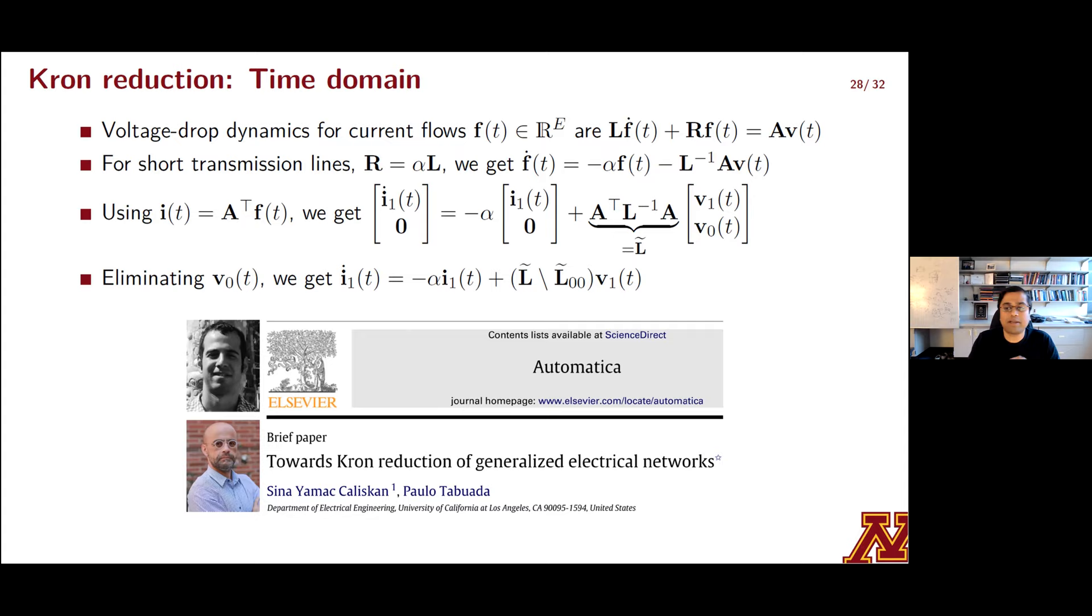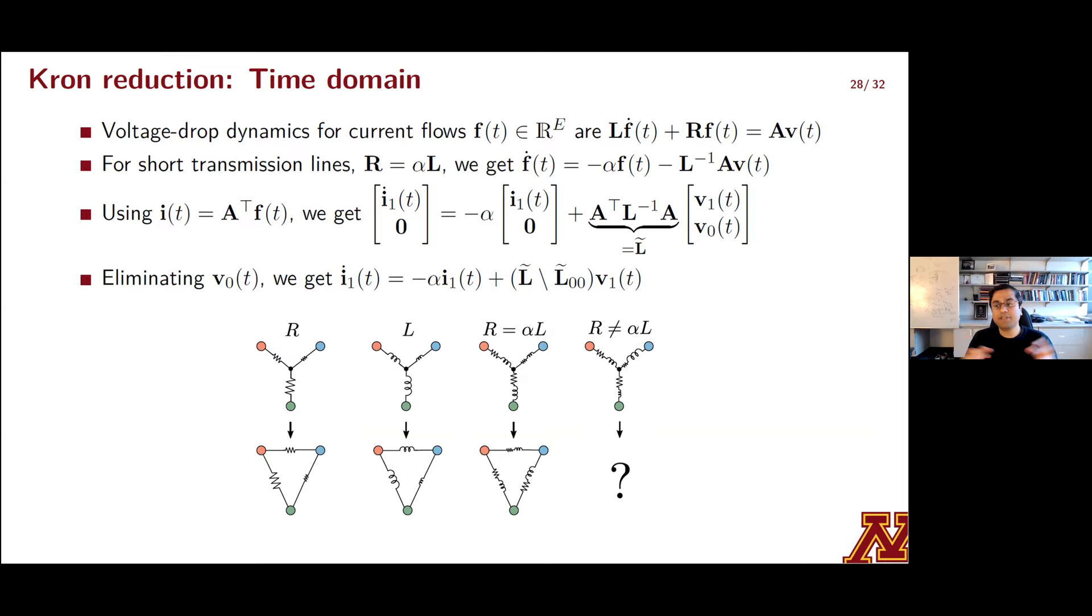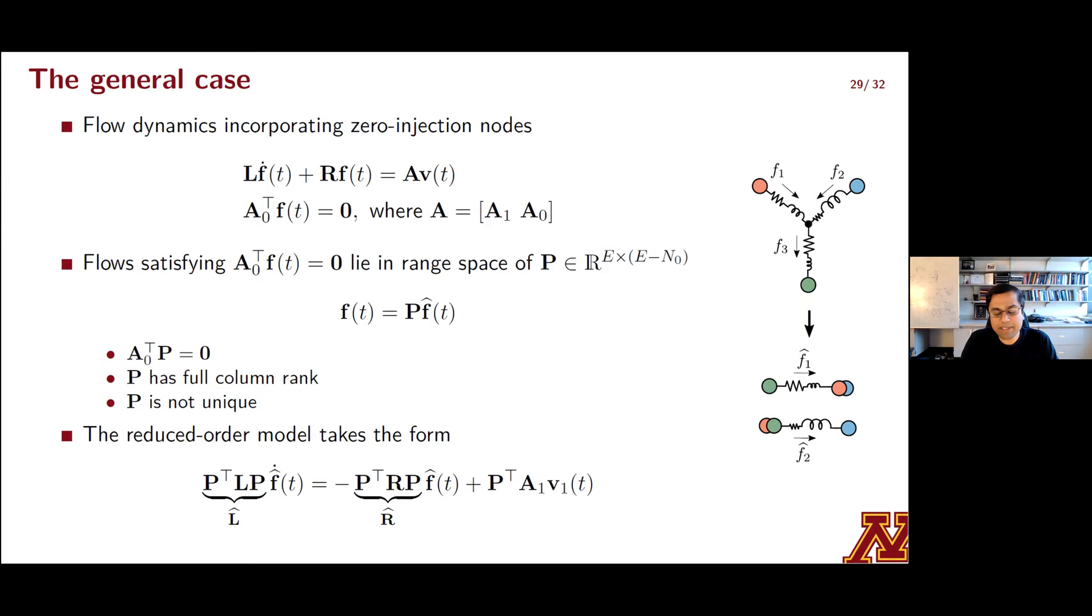So this development in the time domain was actually only recently established. It was done by one Sina Kaliskan and Professor Paolo Tabuada at UCLA in 2014. A reminder though of what we are after. So while the Kaliskan-Tabuada result that's shown here does bring Krone reduction into the time domain, it only does so for homogenous networks with identical R over L ratios. We want to generalize this analysis for networks where the resistance to inductance ratios could indeed be arbitrary. So here's one way to do this. As before, we are going to begin with the RL line dynamics. We'll partition the A matrix and we'll translate the information of zero injection nodes and form linear constraints on current flows.